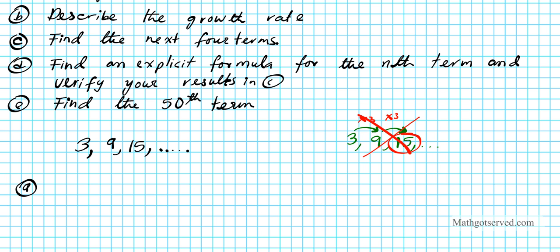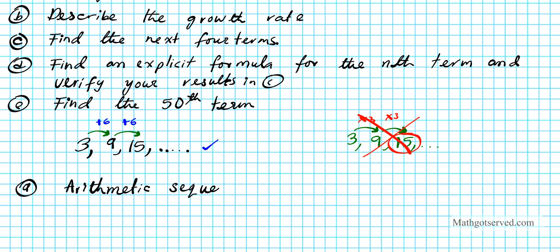Let's test if it's arithmetic — that is, if the growth is additive. From 3 to 9, I add 6. And from 9, if I add 6, I get 15. Since adding the same number yields the correct terms, this is in fact an arithmetic sequence, because we have an additive relationship.